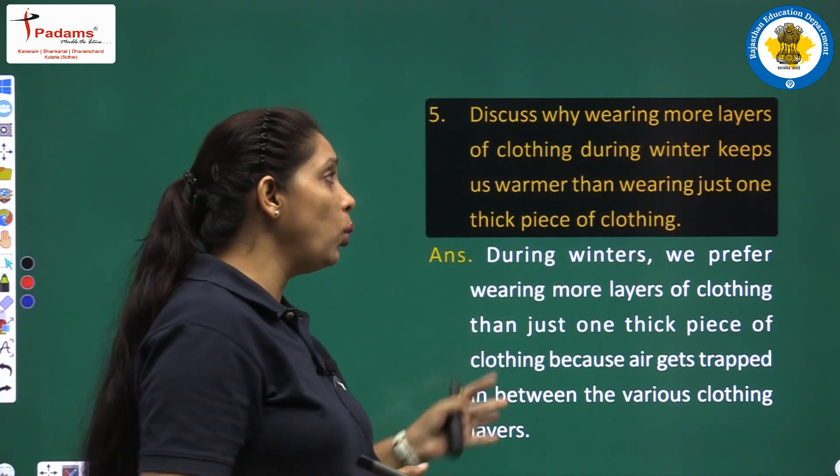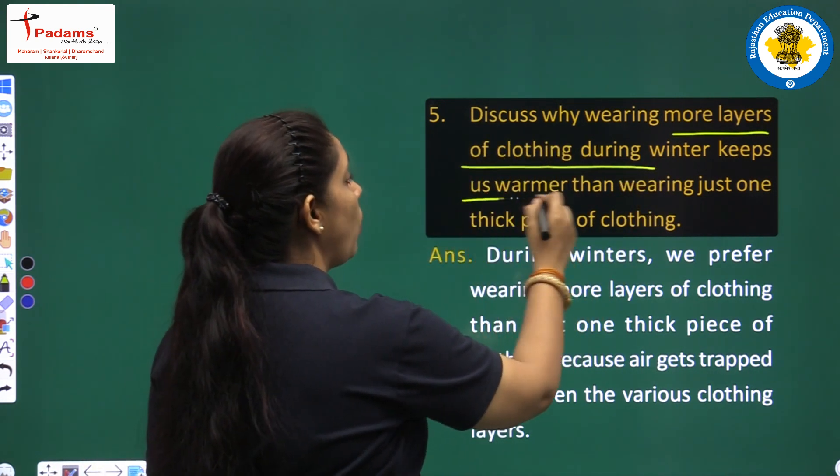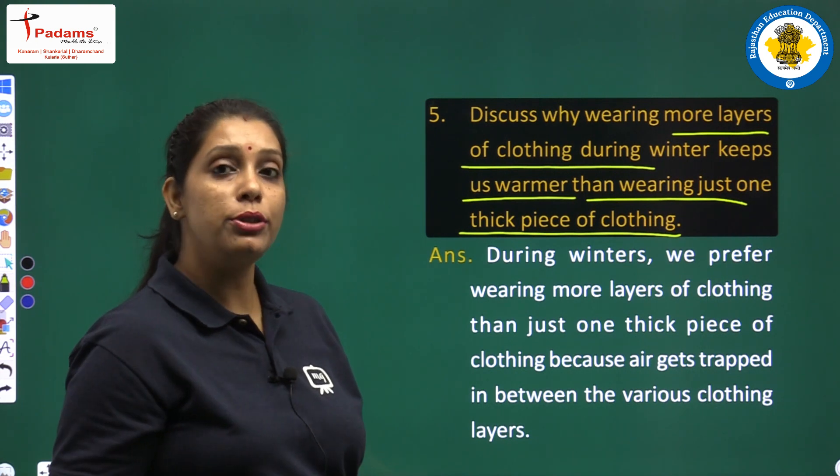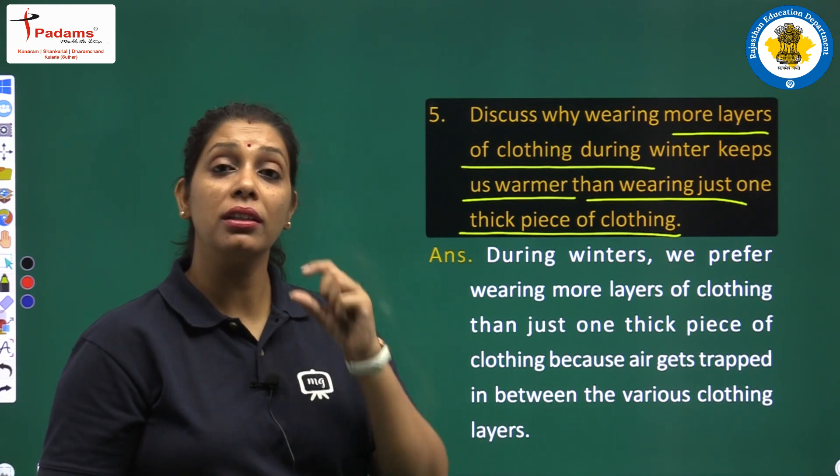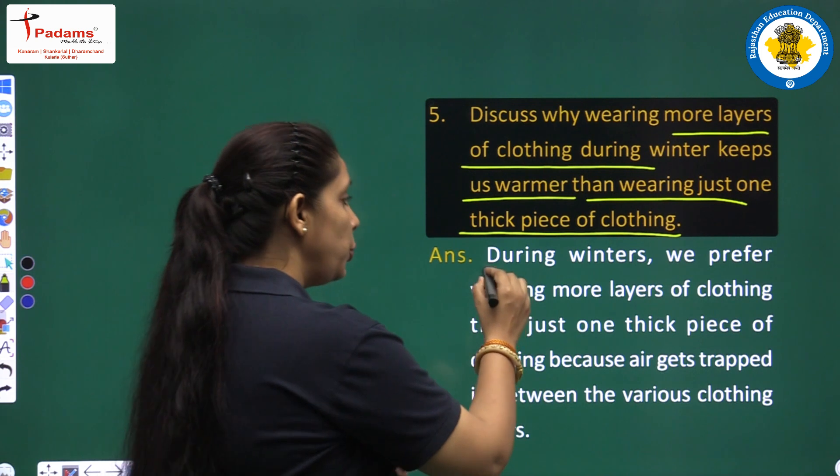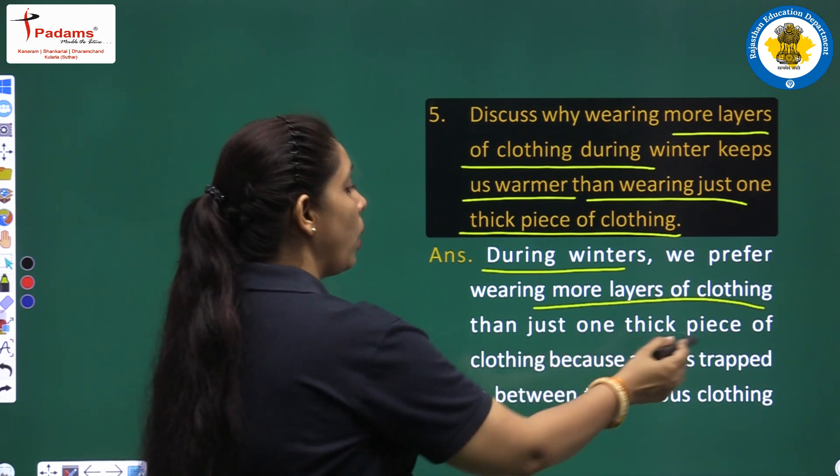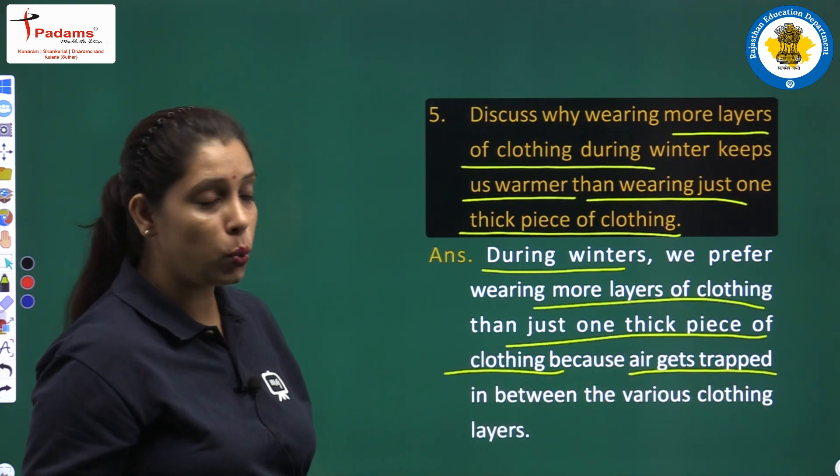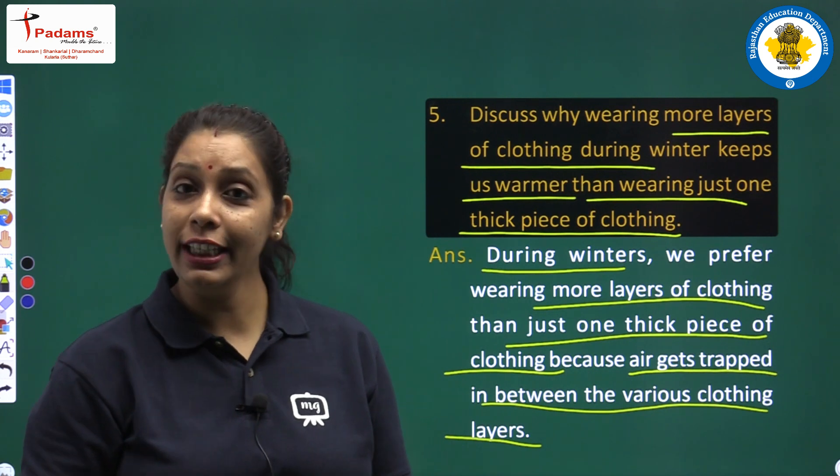Question 5: Discuss why wearing more layers of clothing during winters keeps us warmer than wearing just one thick piece of clothing. We discussed in our chapter. In winters we prefer wearing layers of clothing instead of one thick layer. We have to write: during winters we prefer wearing more layers of clothing than just one thick piece of clothing because air gets trapped in between the various clothing layers.